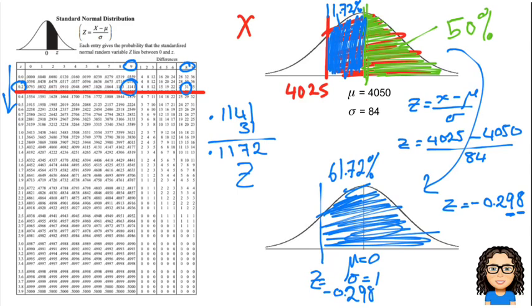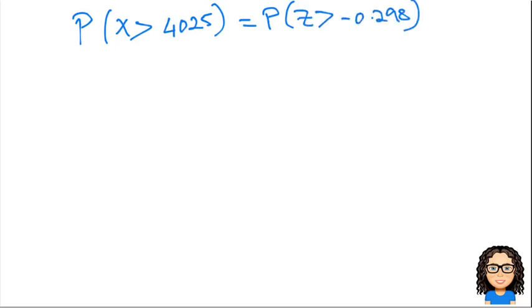Now what we need to do is a calculation. So let's move ahead. So we have found the probability that x is more than 4025. That's the same as the probability that z is more than negative 0.298. And that is the value of 0.617. Okay.